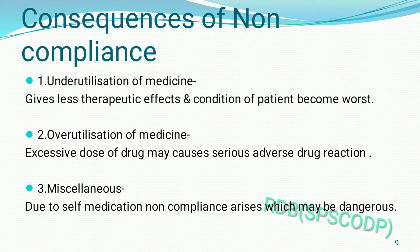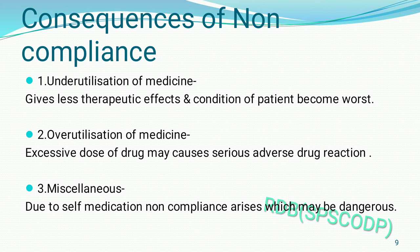So these are the reasons for patient non-compliance. The next point is the consequences of non-compliance — what bad effects can occur. If the physician or pharmacist's instructions are not followed, for example if told to take one tablet and the patient takes two, toxic or poisonous effects may be produced. If the patient does not take medicine on time, the disease may not be cured, worsening their condition. The first consequence is under-utilization — less drug intake leads to less therapeutic effects and the patient's condition becomes worse.